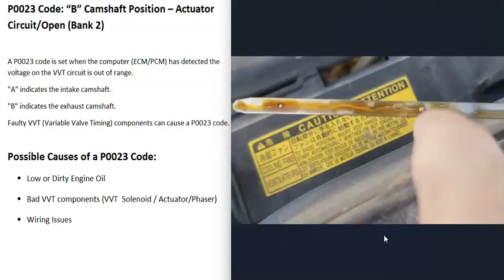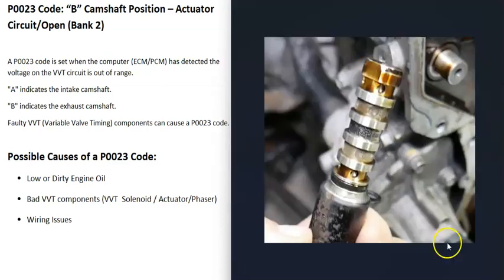The first thing to do whenever you have any kind of variable valve timing problem is to check the engine oil — make sure it's not low or really dirty. Oil flows through all those variable valve timing components, and if the oil is low or dirty it can throw them off and cause problems. Even though the P0023 code points more toward a wiring problem, it's always a good idea to check the engine oil first.